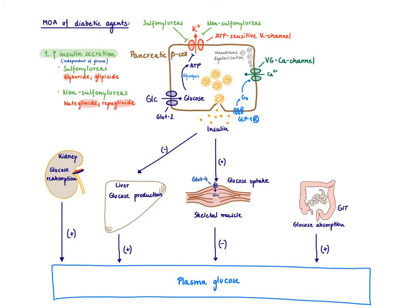So how can we treat type 2 diabetic patients? One option, and this is our first class, is we can increase insulin secretion. So just get out more insulin out of the beta cell. There are two classes that do that: the sulfonylureas and the non-sulfonylureas. They both inhibit the ATP-sensitive potassium channel.